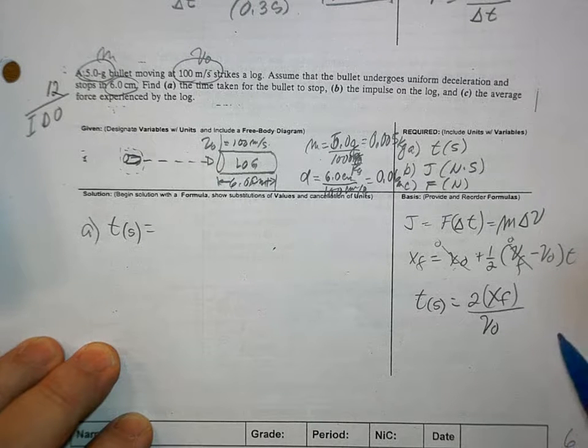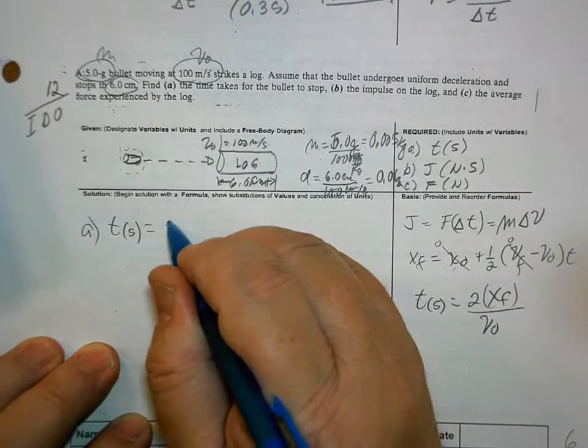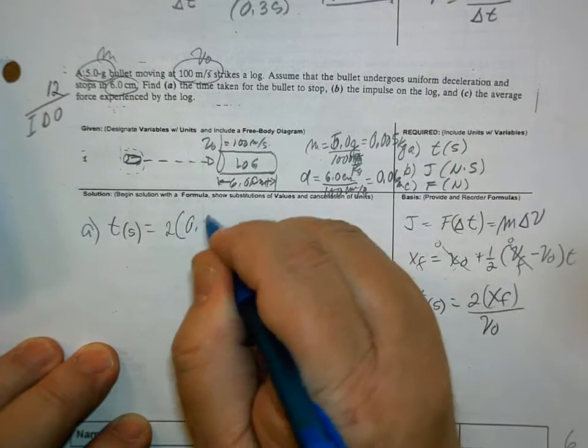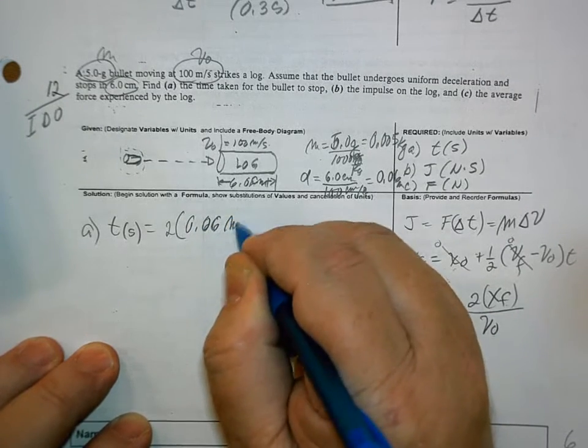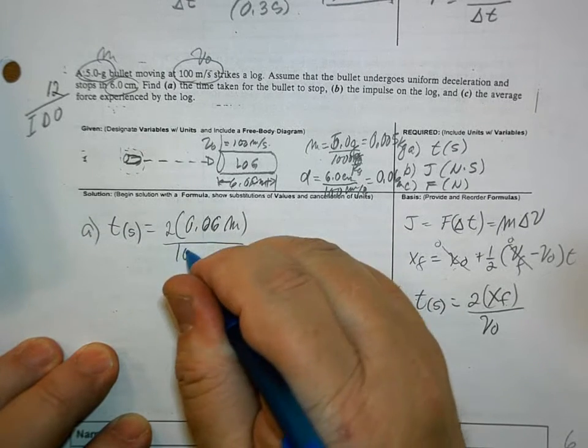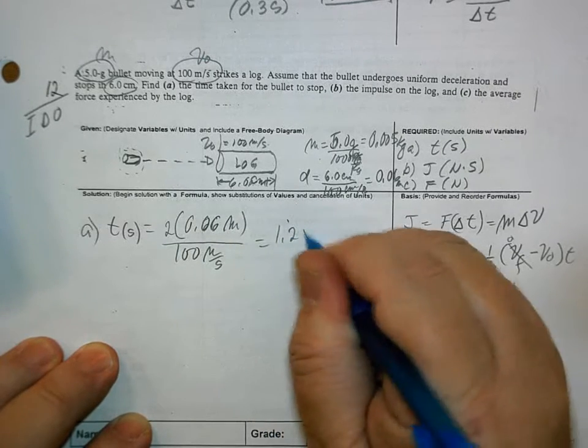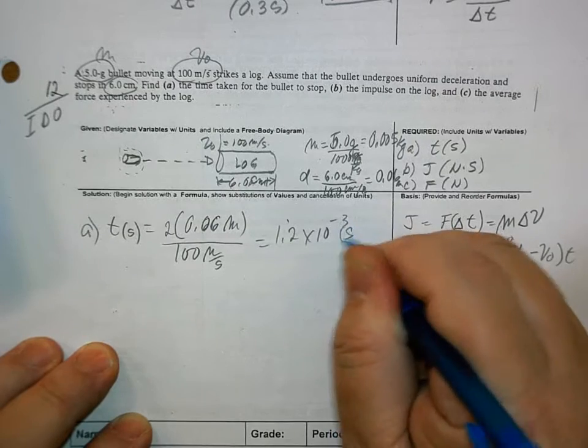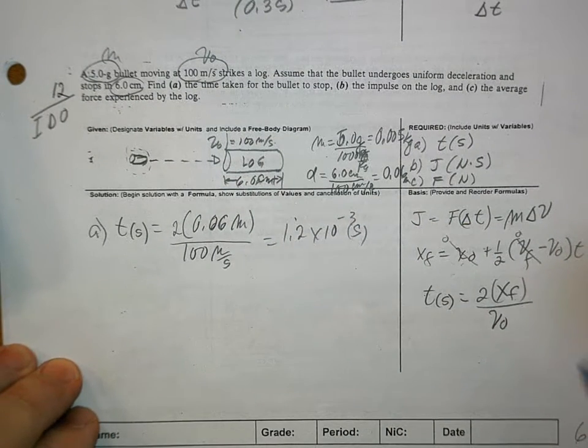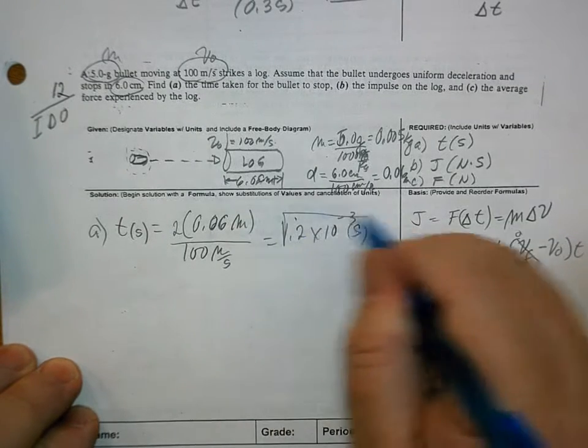So we have 2 times XF is 0.606 meters divided by 100 meters per second. And the answer is 1.2 times 10 to the negative 3 seconds. Okay? That's your answer for that.